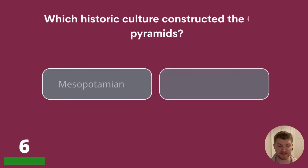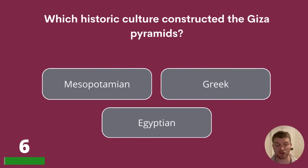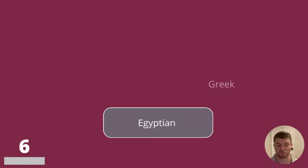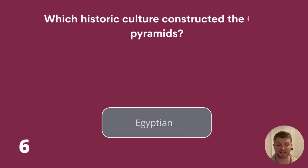Question 6. Which historic culture constructed the Giza pyramids? Mesopotamian, Greek or Egyptian? The correct answer is Egyptian.